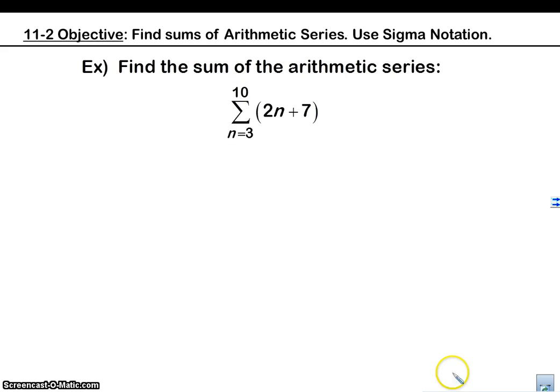So let's take a look at one example here. Find the sum of the arithmetic series. So what you could do is you could plug in 3. All right, so we're going to get 2 times 3 plus 7, which is 6 plus 7, which is 13. Right. Okay, that's our first term. Now we're going to plug 4, then 5, then 6, then 7, then 8, then 9, and finally 10. So we plug 4 in, and we're going to get 8 plus 7, which is 15. Right. And then we're going to plug 5 in. 2 times 5 plus 7, 10 plus 7 is 17. Okay, we kind of see a pattern here. Right. They're going to add by 2 each time.